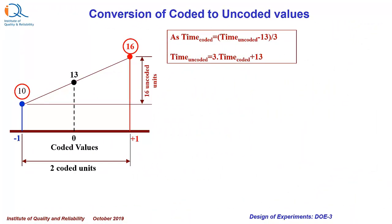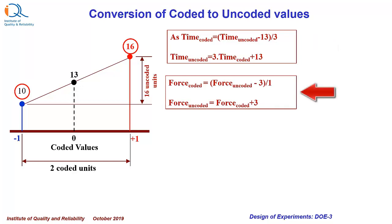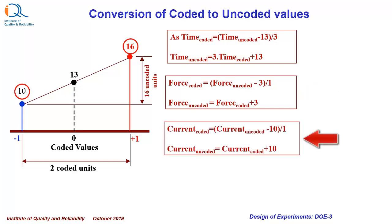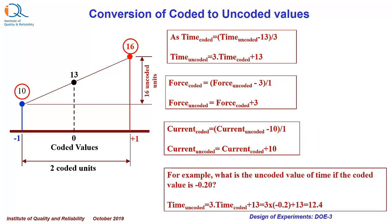It is also easy to convert coded values to uncoded values. For time, the equation is: time coded equals time uncoded minus 13 divided by 3. Therefore, time uncoded equals 3 times time coded plus 13. Similarly, force uncoded equals force coded plus 3, and current uncoded equals current coded plus 10. For example, if the coded value is minus 0.2, the uncoded value is 3 times minus 0.2 plus 13, giving 12.4 as the setting corresponding to minus 0.2.